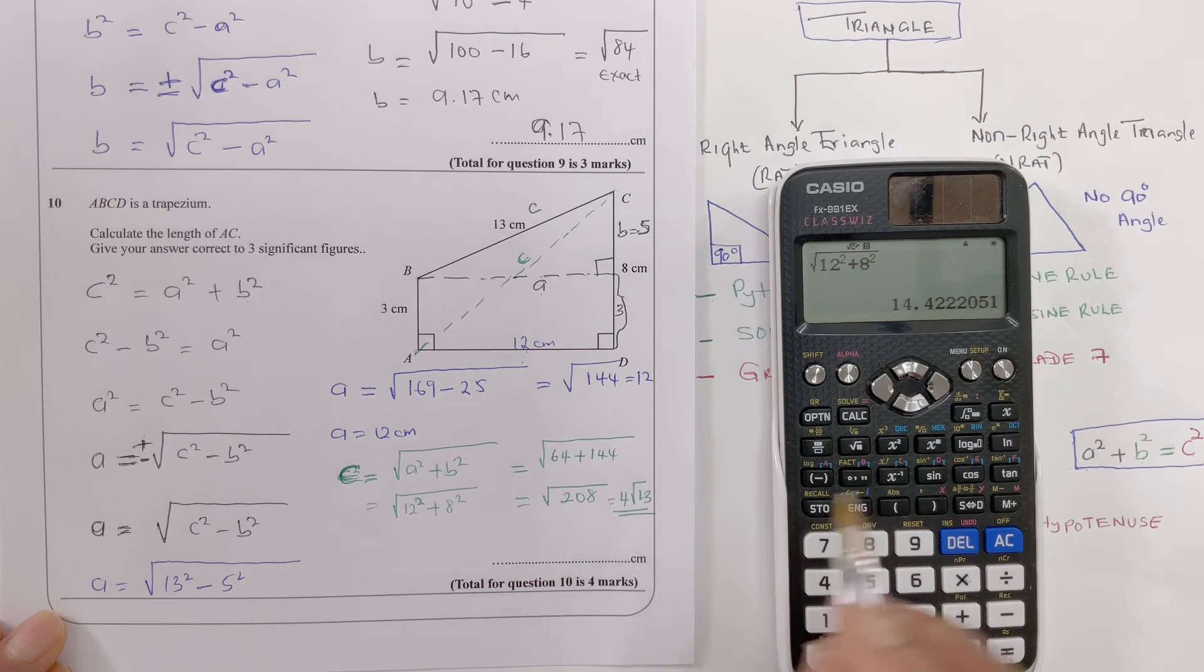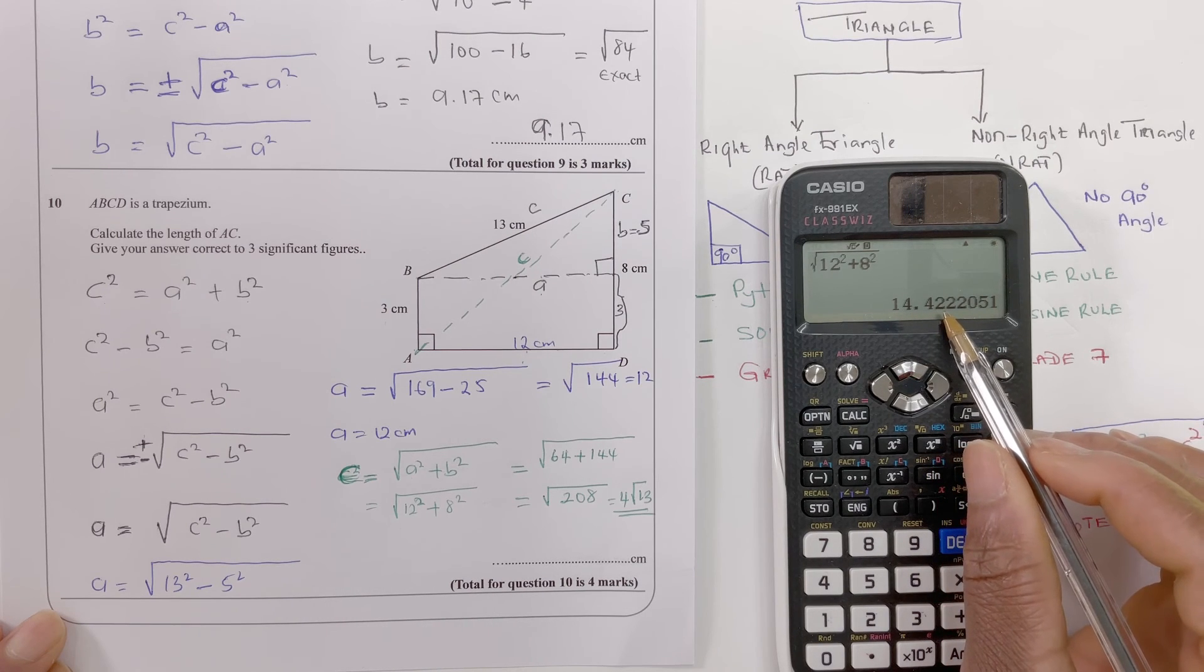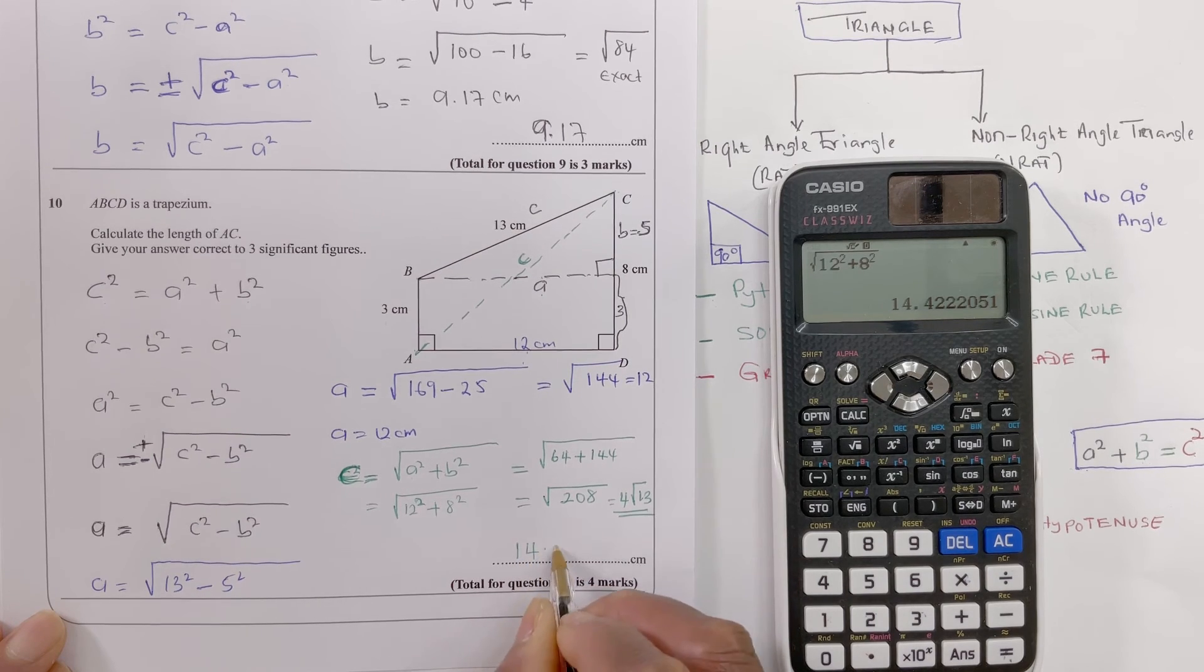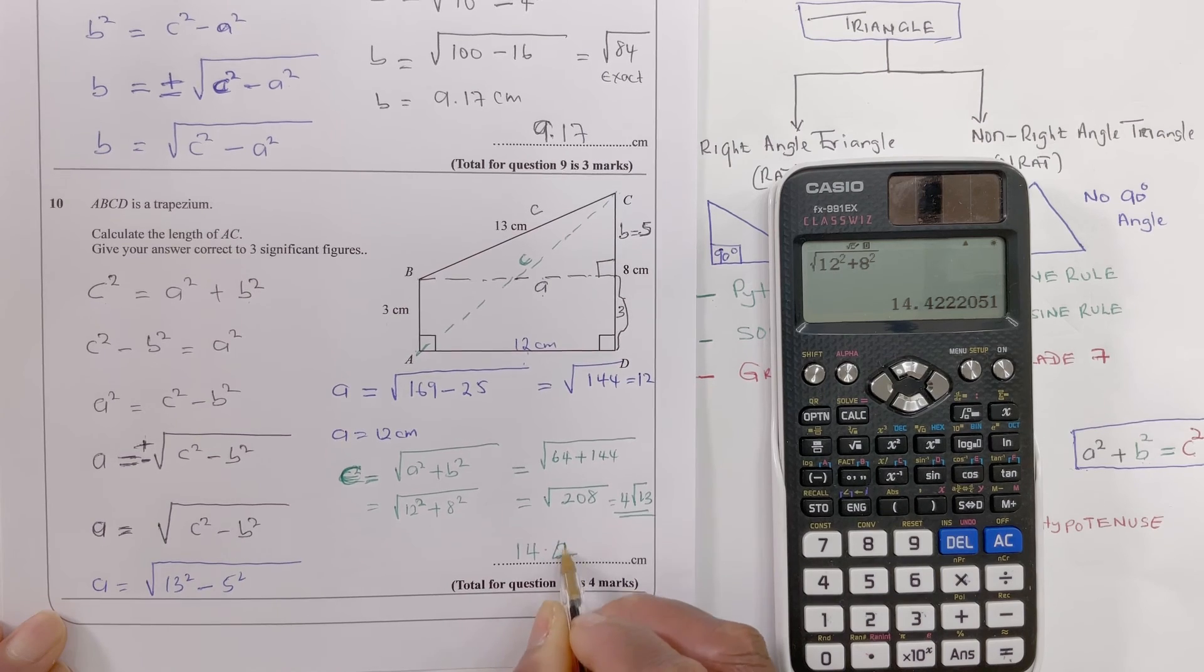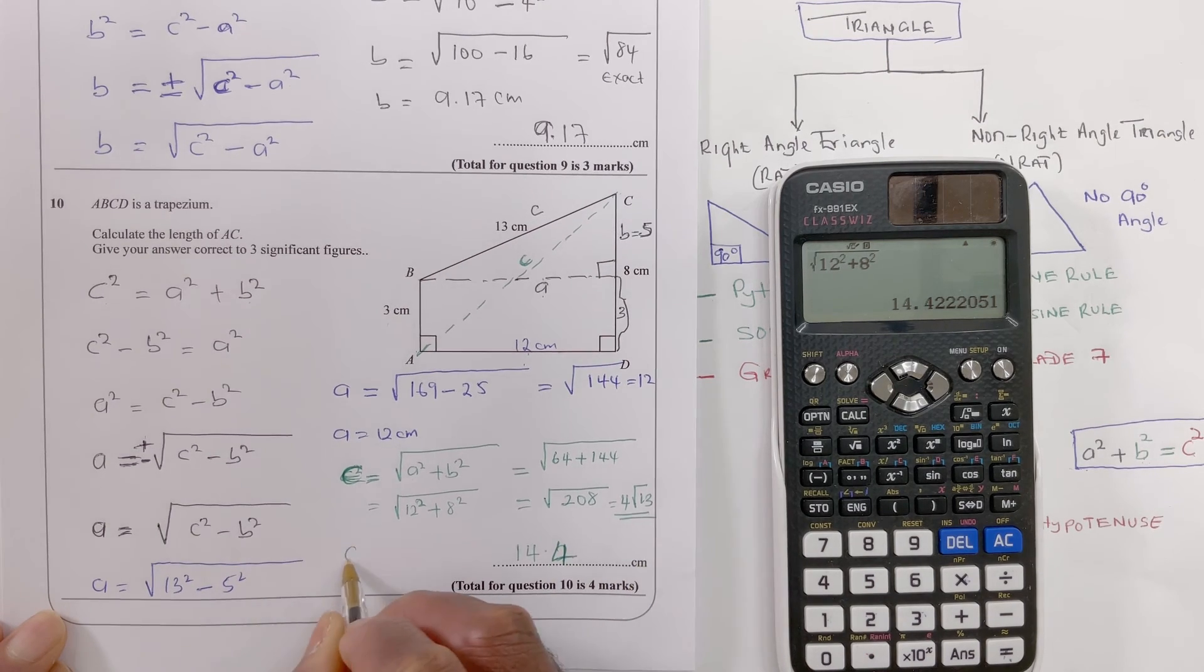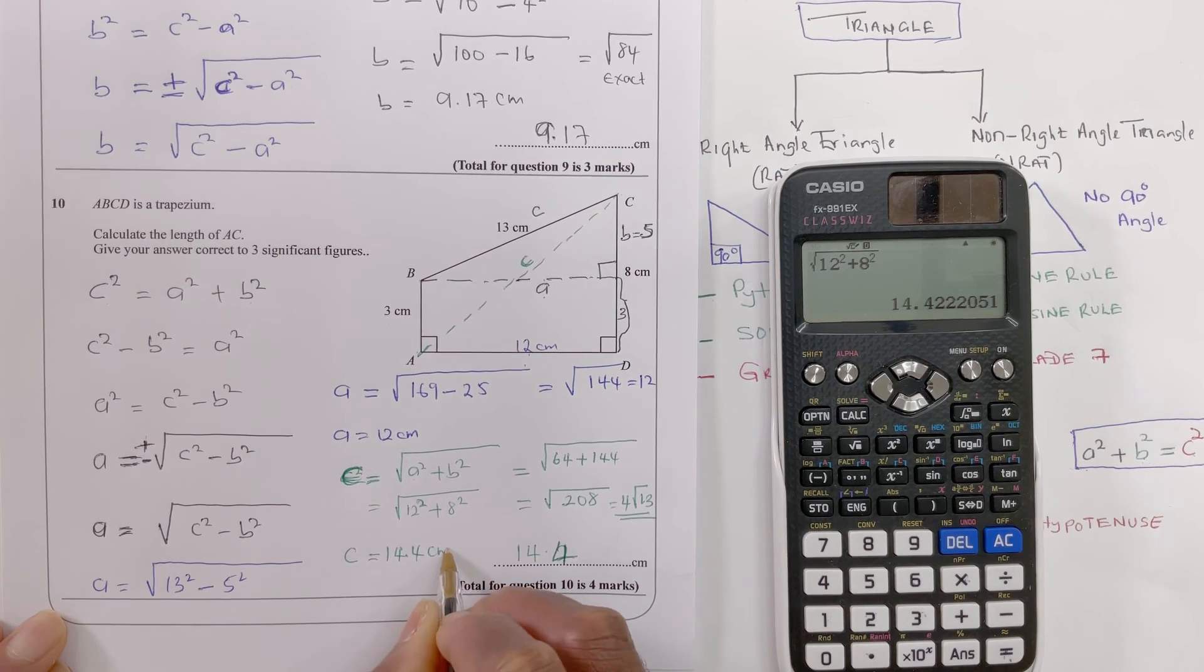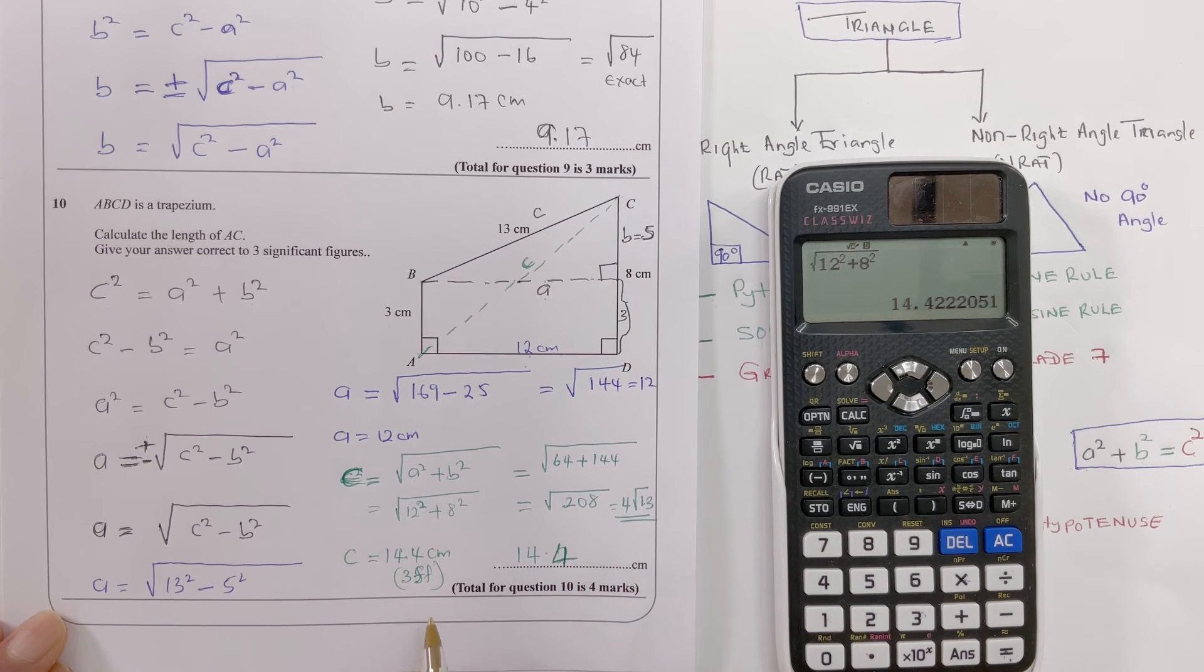And that will give us the three significant figures. The three significant figures: one, two, three. Next one is two, less than five, so I have to put 14.4 centimeters. So c equals 14.4 centimeters, three significant figures. So that's what that is.